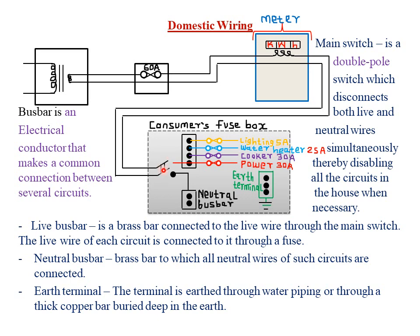From here we have the main switch, which is a double-pole switch that disconnects both the live and the neutral wire simultaneously, thereby disabling all the circuits in the house when necessary. It consists of the live wire part and the neutral part, which connects to the neutral bus bar.